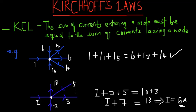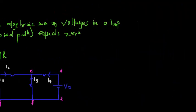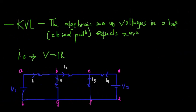Now let's look at the second Kirchhoff law, which is Kirchhoff's voltage law, or KVL. Kirchhoff's voltage law simply implies that the algebraic sum of voltages in a loop or a closed path equals zero. From this circuit we can notice there are certain voltages and resistors, and we need to understand what a loop is.